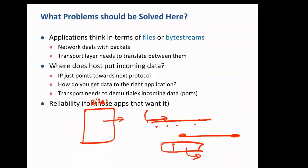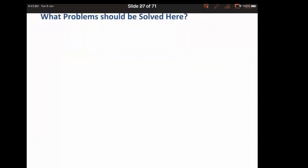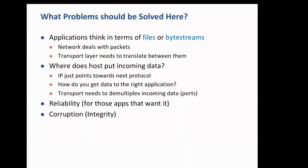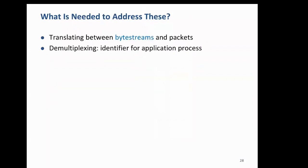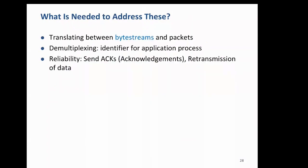If you want reliability, some applications need it and some don't care — if packets are dropped, it doesn't matter. Some may care about corruption — if somebody changed the data. If the sender is sending at a very high rate and the receiver or intermediate routers cannot handle it, that must also be dealt with. The reliability part is taken care of by TCP.